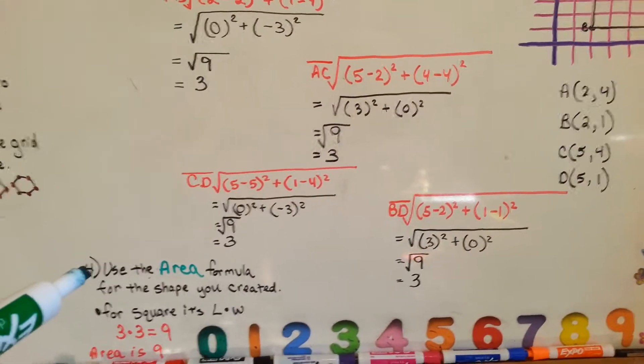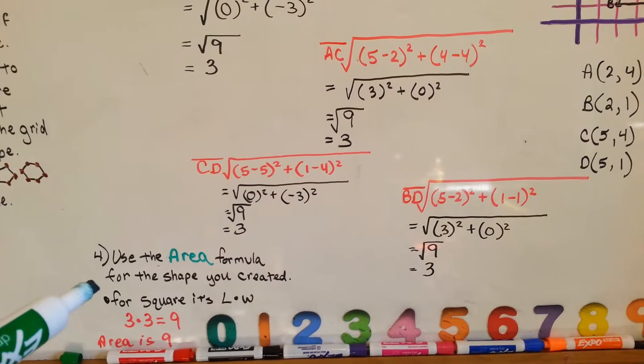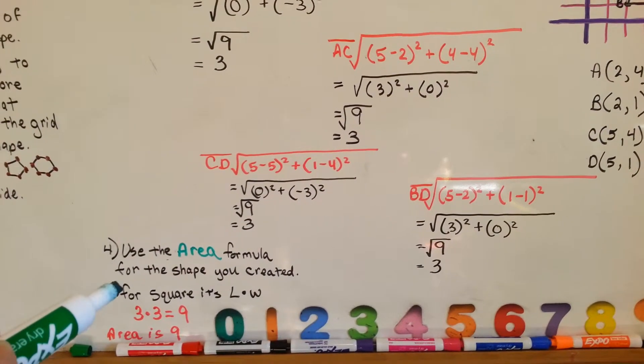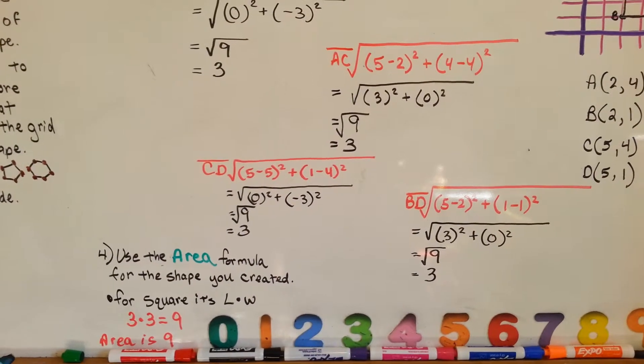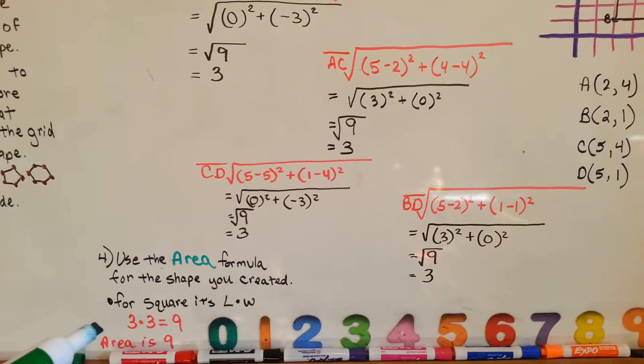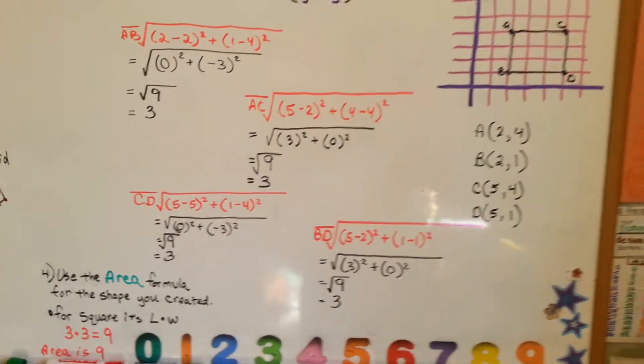So, the last thing you're going to do is use the area formula for the shape you created, square, to find its area. To find the area of a square, it's length times width. So, 3 times 3 is 9. The area is 9. Wasn't that easy?